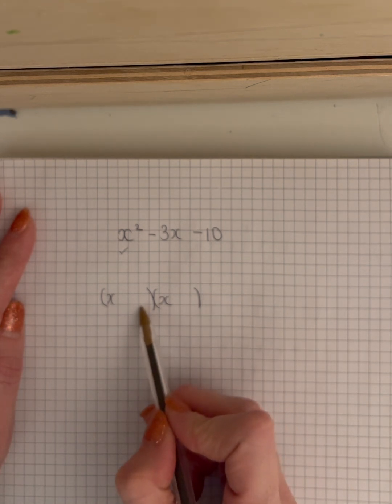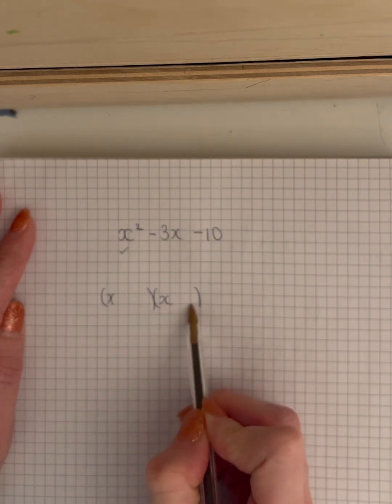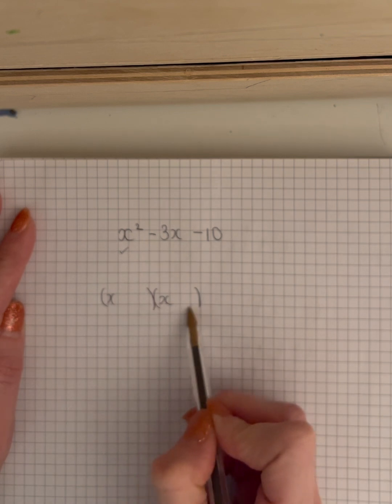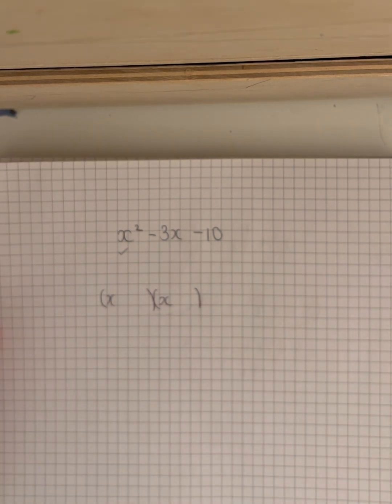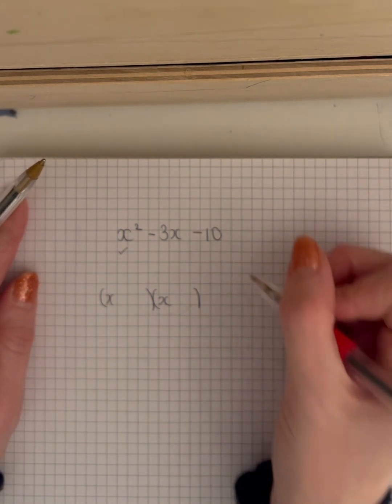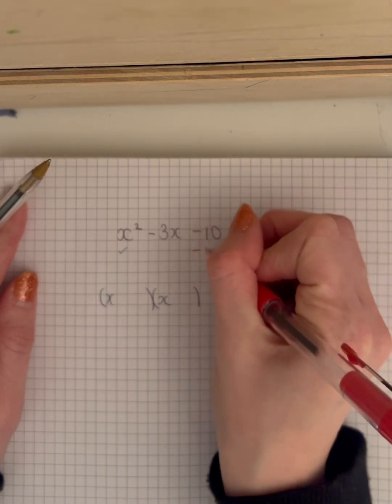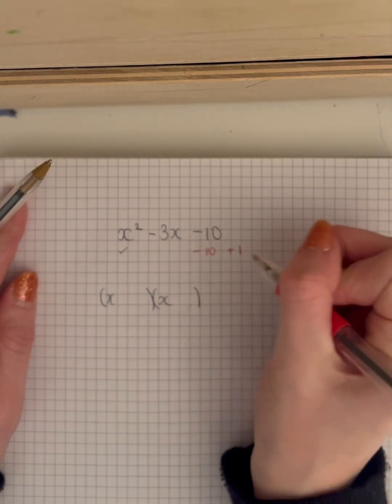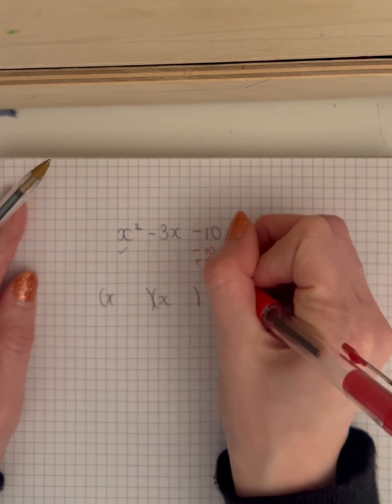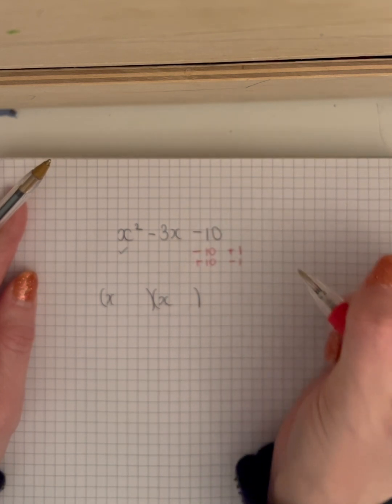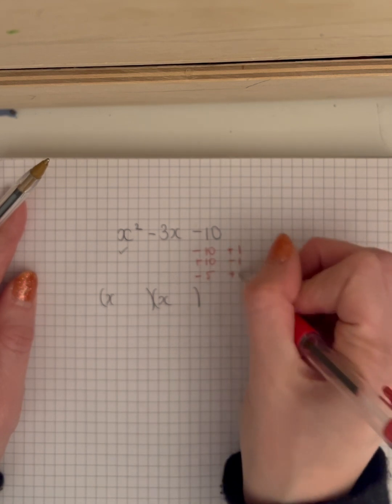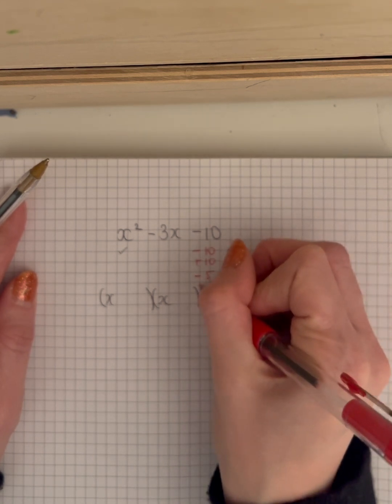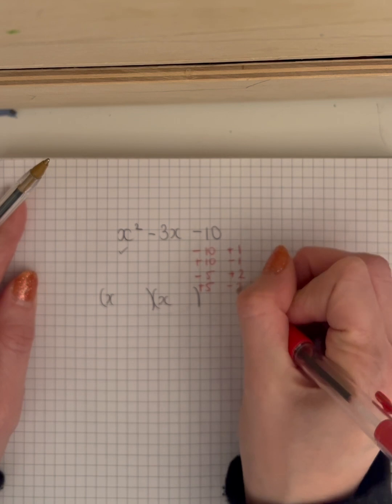So now I know that when I multiply the last together here, the firsts are here, the lasts, I need two numbers that are going to multiply to give minus 10. So multiply to give minus 10, I could have minus 10 and a positive 1, I could have a positive 10 and a minus 1, but I could also have a negative 5 and a positive 2, or a positive 5 and a negative 2.